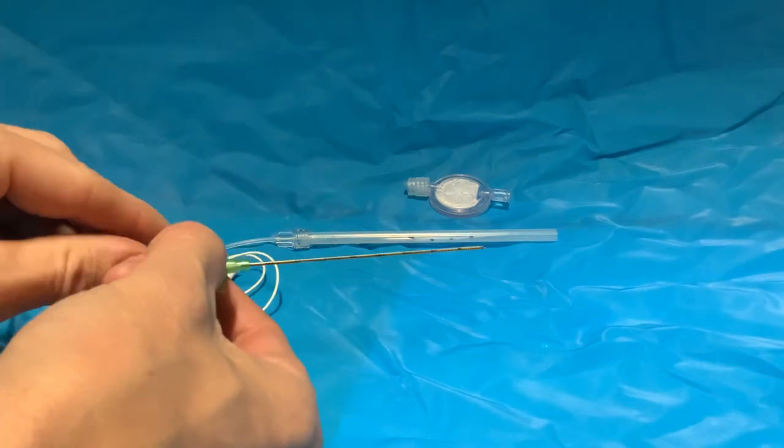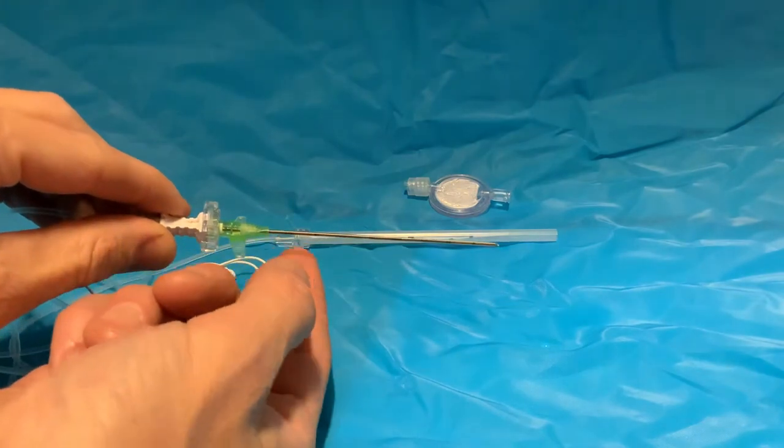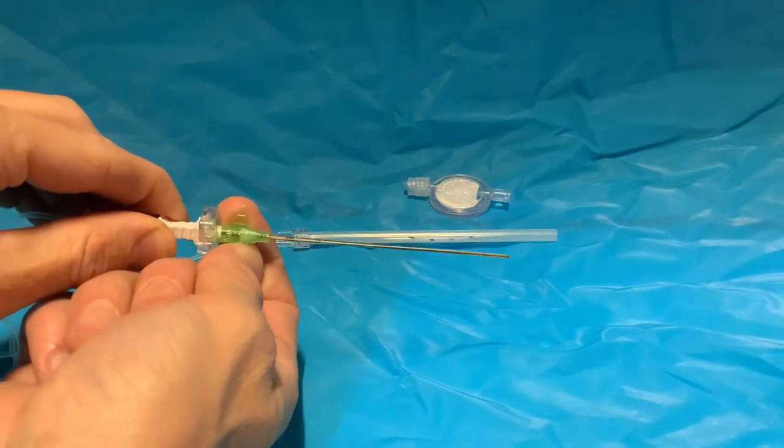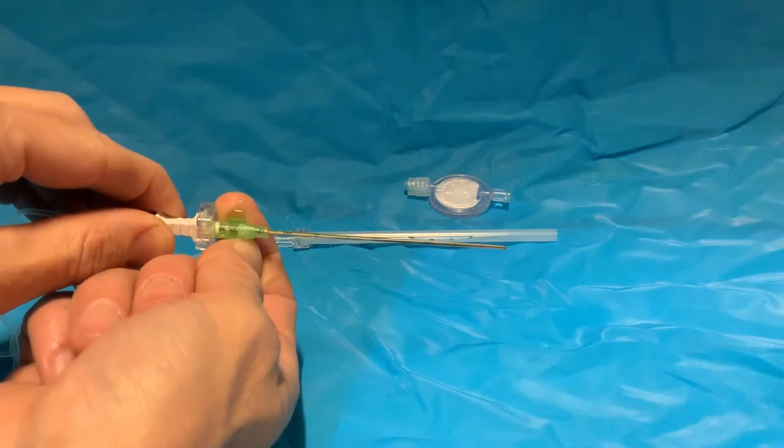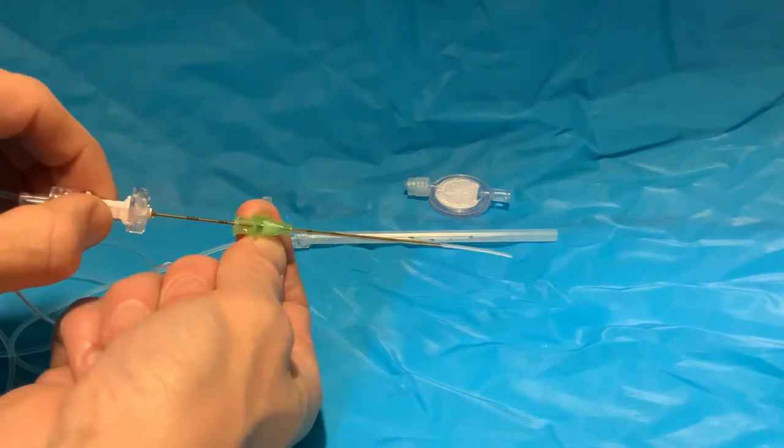Place the needle to the depth that you want it under ultrasound. When you're ready to remove it, you need to turn the hub of the cannula, not the needle, to 90 degrees and it will slide off.